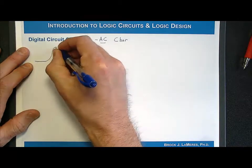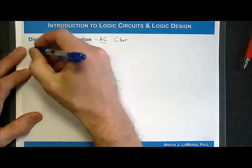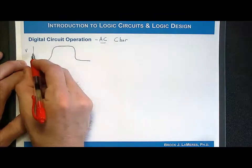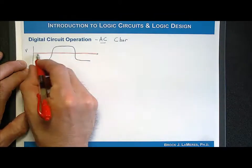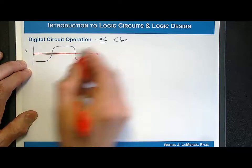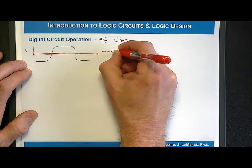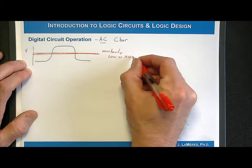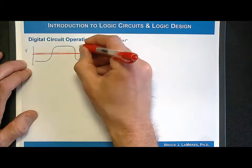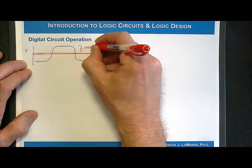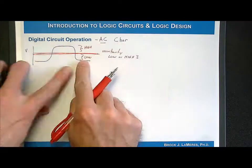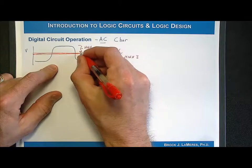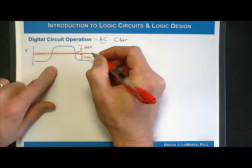Let's say a voltage looks like this where on the y-axis you have the voltage. What we do to chop this into two states is we have this region in the middle which is kind of the uncertainty region, because we really don't know whether it's a low or a high.